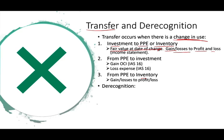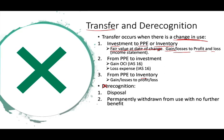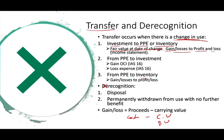Derecognition occurs under two circumstances. First, when you dispose of it — when you sell it or exchange it. Second, when you permanently withdraw it from use with no further benefit. When you remove the asset, you either have a gain or a loss. The gain is computed by taking the proceeds — let's assume cash — minus the book value or carrying value of that asset. That gain or loss goes into the income statement.